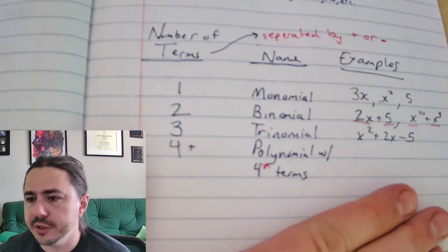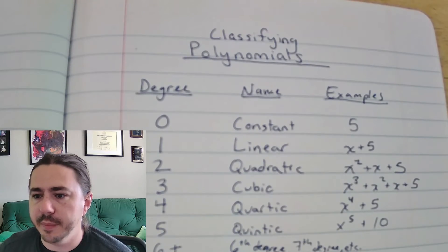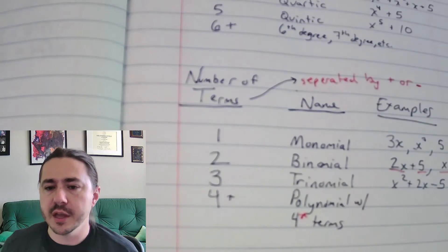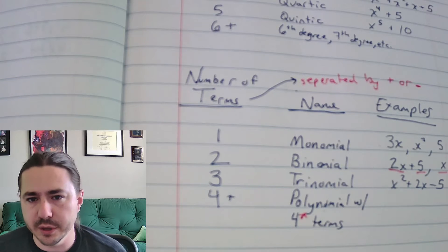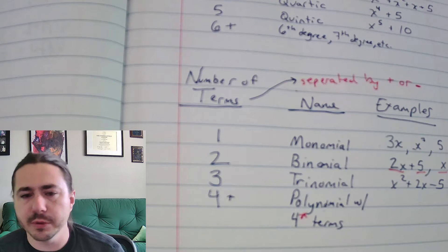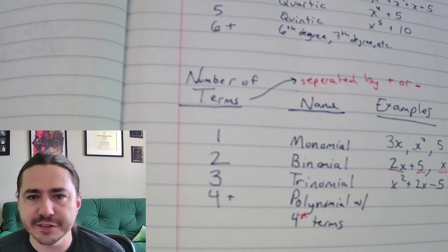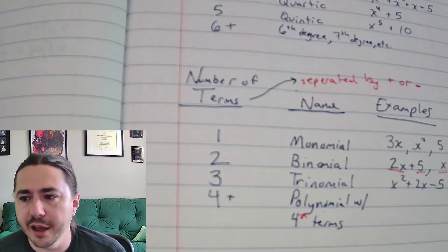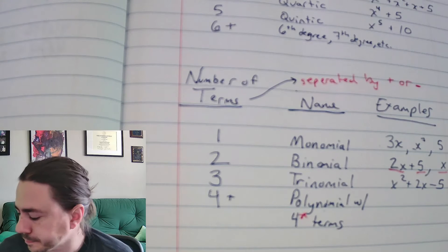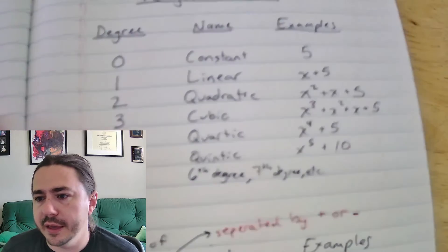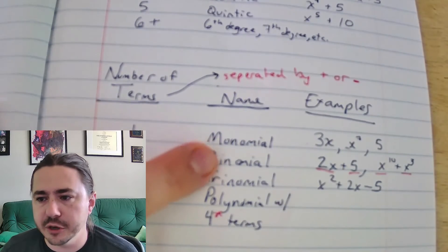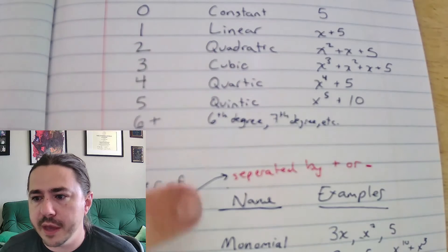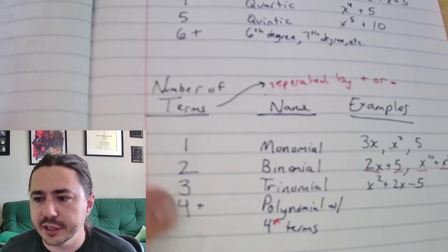So those are the two different ways we can classify polynomials — either based on the degree or the number of terms. Usually when we want to classify a polynomial, we take both into account. The way you name them is first by degree, then by number of terms. You can have any combination — like a cubic monomial or a linear binomial.